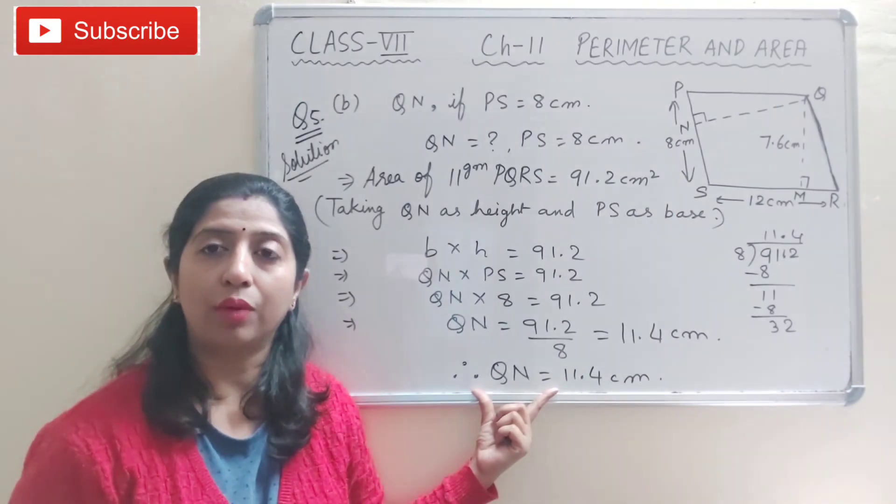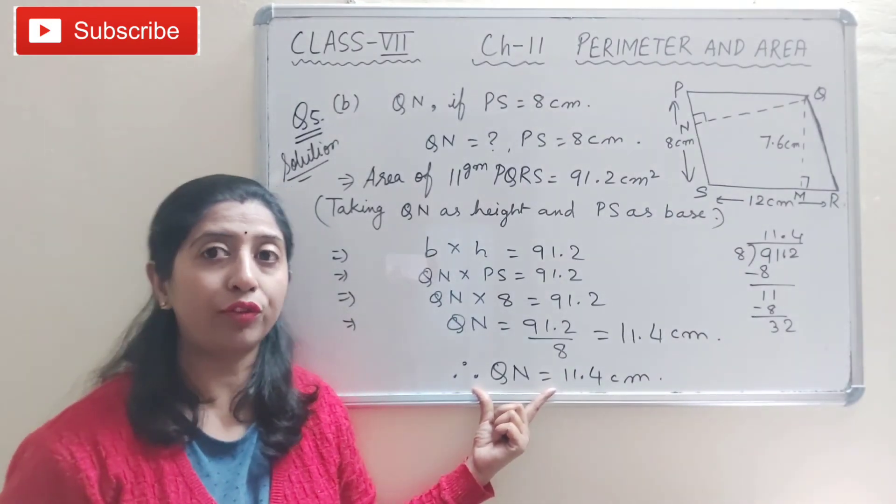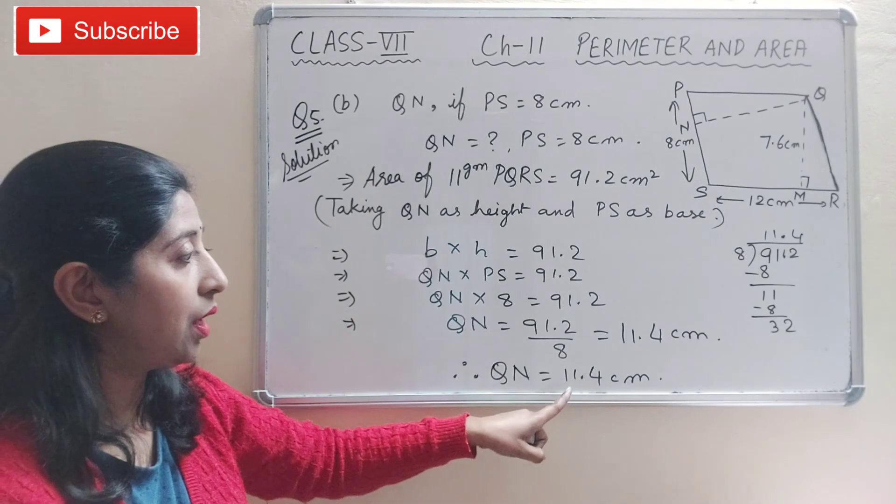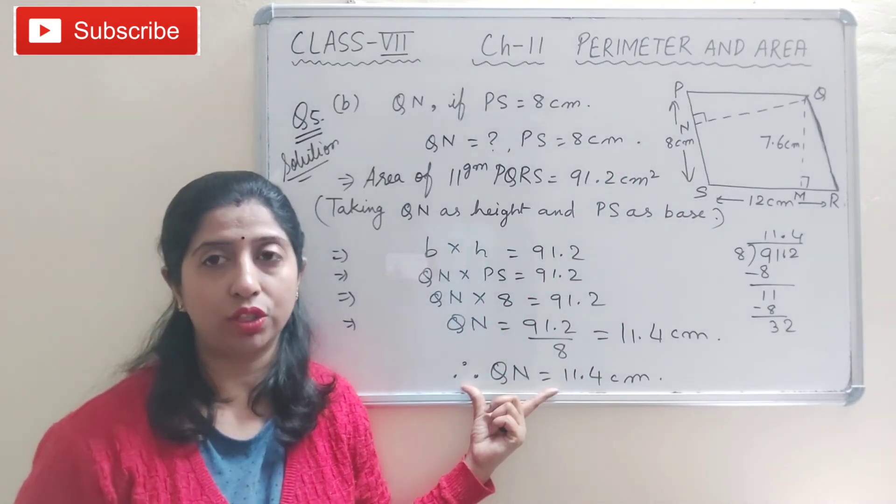So in part (a) we found the area of the parallelogram, and after that, using that same area, we found the missing height QN.